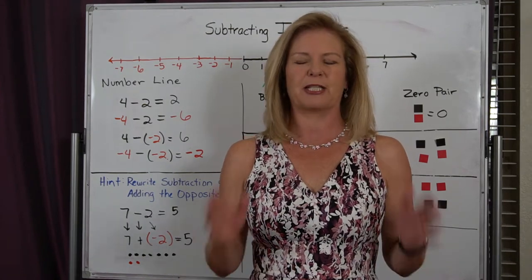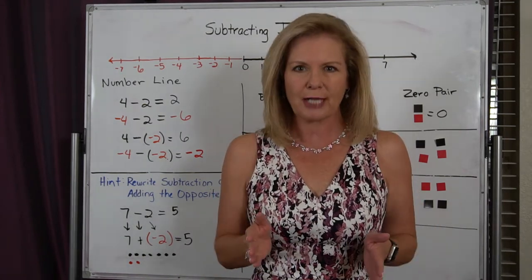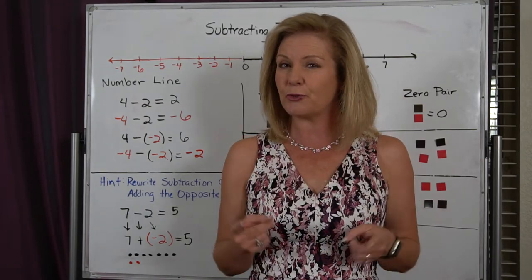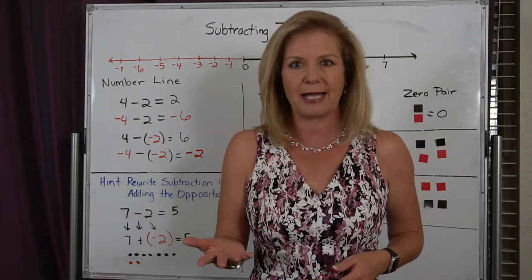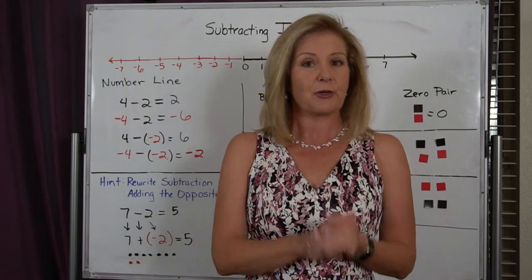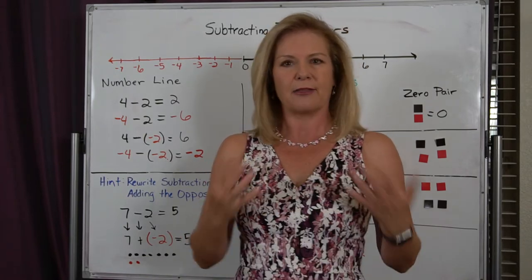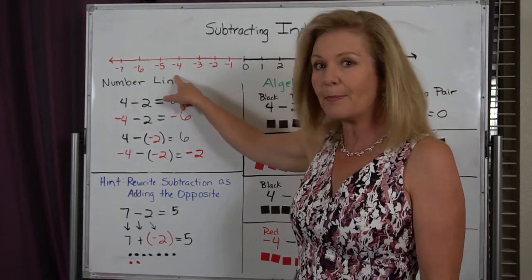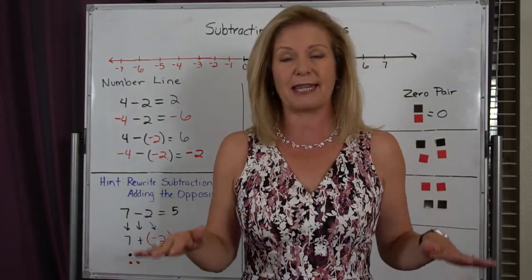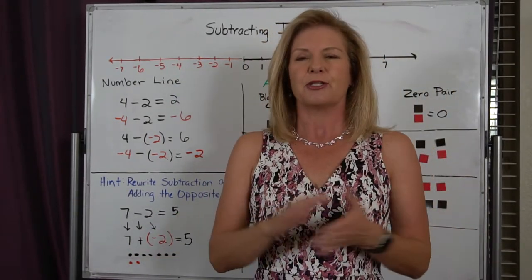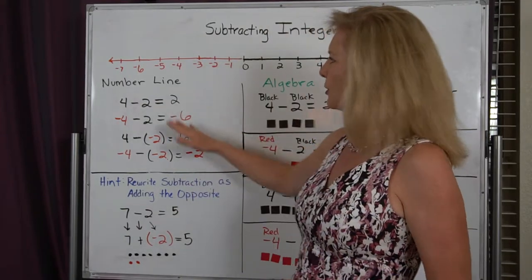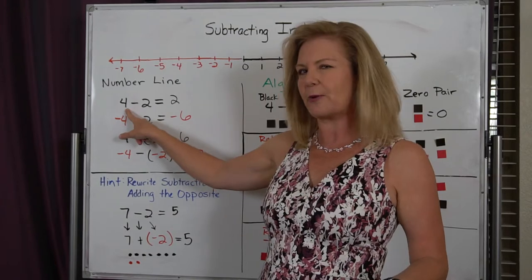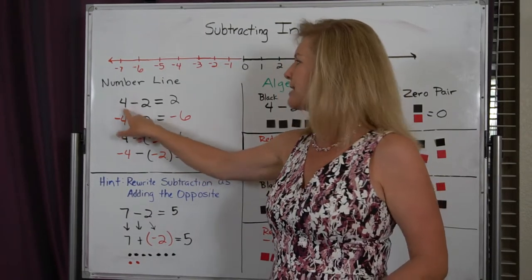Most people find subtraction to be the hardest operation when working with integers. Today I'm going to show you two different ways that you can visualize what's going on with the integers. We're going to start with the number line, which includes all the positive whole numbers and their opposites that make up the integer number system. When we look at the number line and we have an equation, the first number always tells us where we're going to start — so I'm going to start at 4.